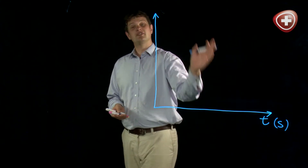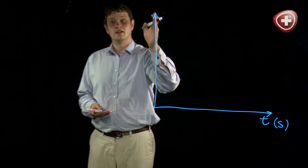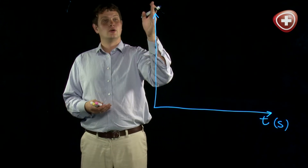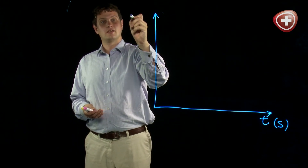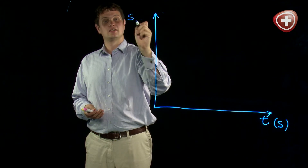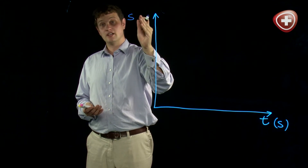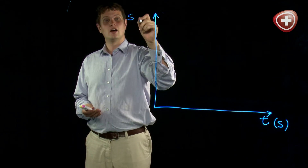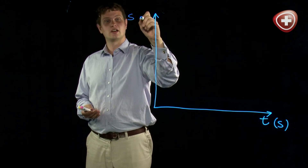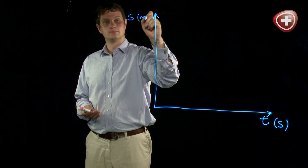That means that our displacement is going to go on our y-axis. The symbol for displacement is s, and the units — again, every quantity must have a unit — our units are going to be in meters.